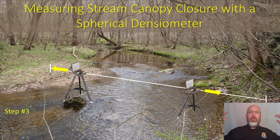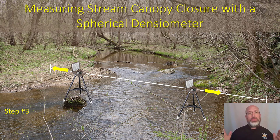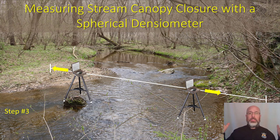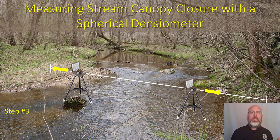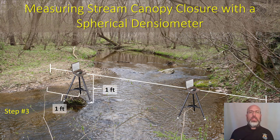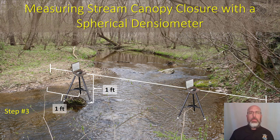If you're interested in overhanging vegetation — maybe for fish habitat — or you're in a stream that's pretty wide where taking all the measurements in the center might result in all zeros, you can also add two measurements along the left descending bank and the right descending bank. In this case, you're going to face directly towards the bank, and you want the densitometer to be one foot above the water surface and one foot from the bank.